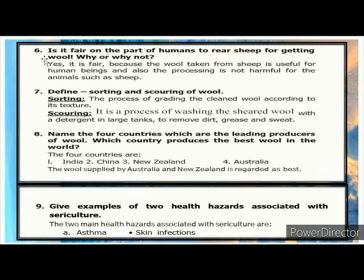Question 8: Name the four countries which are the leading producers of wool. Which country produces the best wool in the world? Answer: The four countries are India, China, New Zealand, and Australia. The wool supplied by Australia and New Zealand is regarded as the best.